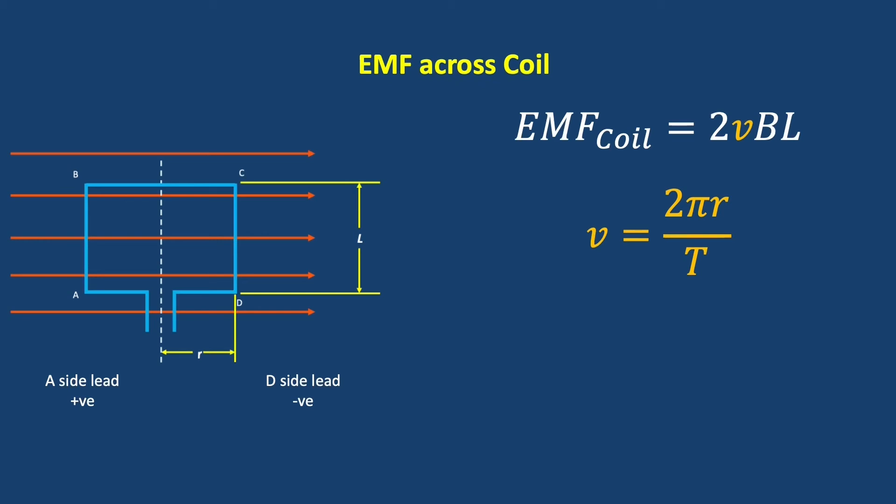We can take this now and insert it into our 2VBL equation. And we have EMF max is equal to 2 multiplied by circumference over period multiplied by B multiplied by L.